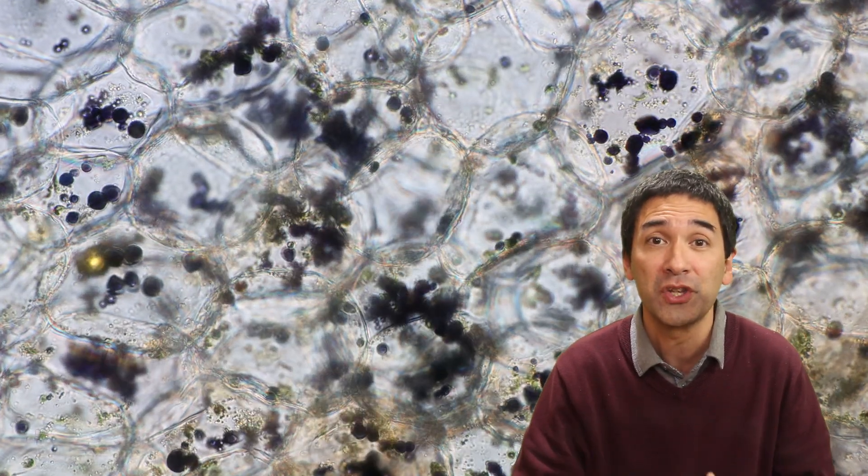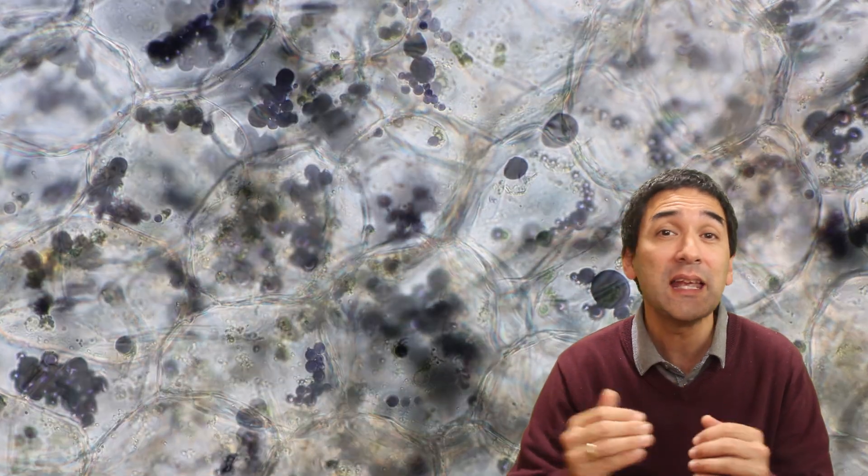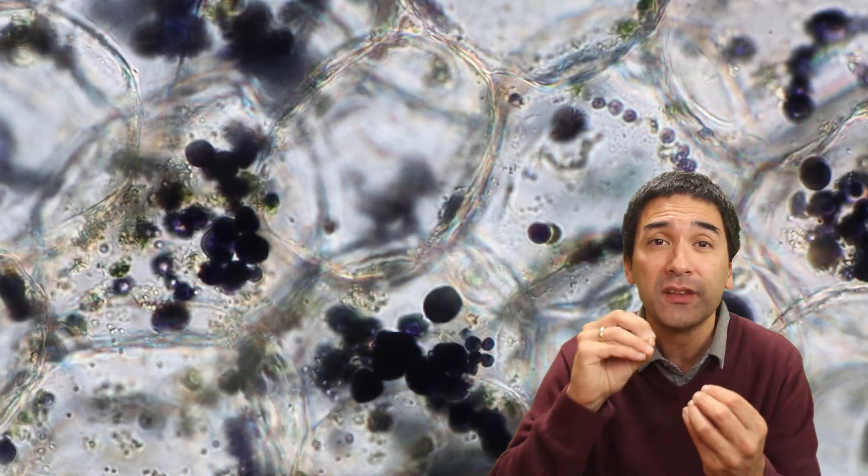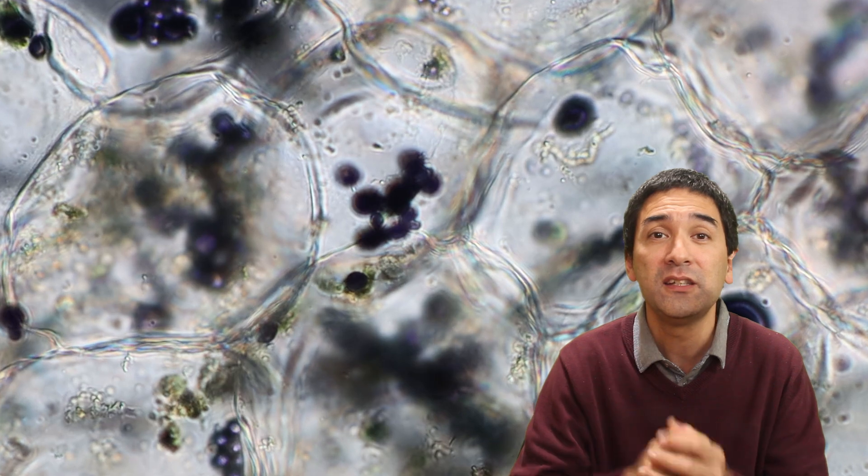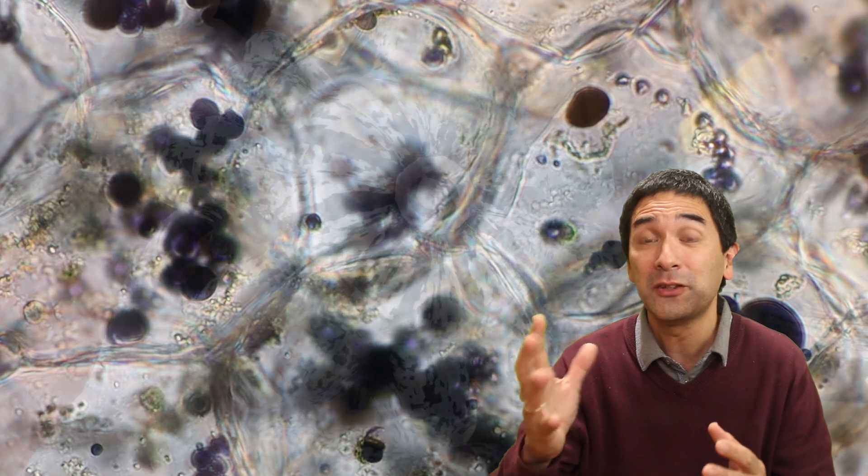Here we can see the pumpkin cells that I've made very thin cuts of and stained with iodine. The iodine combines with the starch grains and gives a black color. These are now the starch grains inside the cell, and that's the answer.